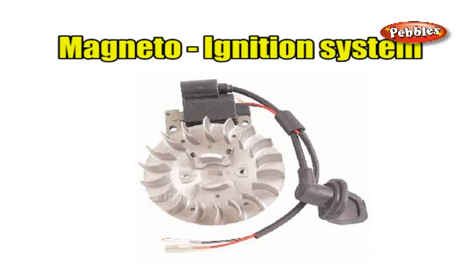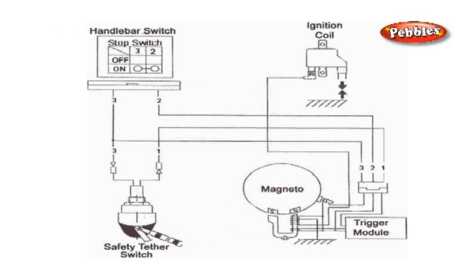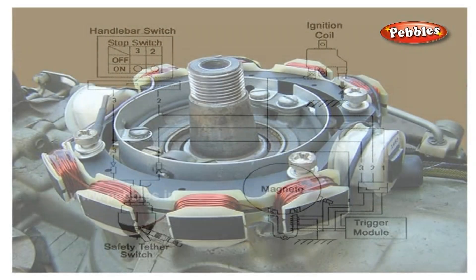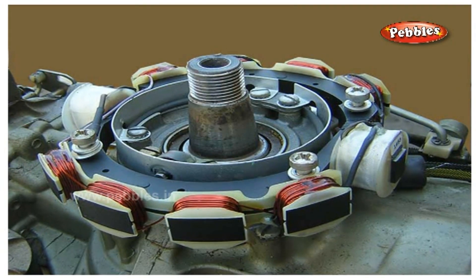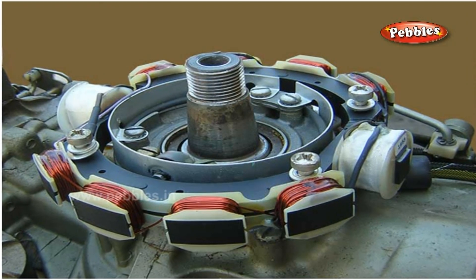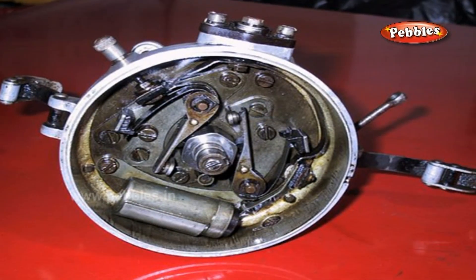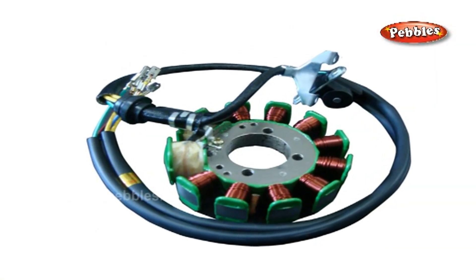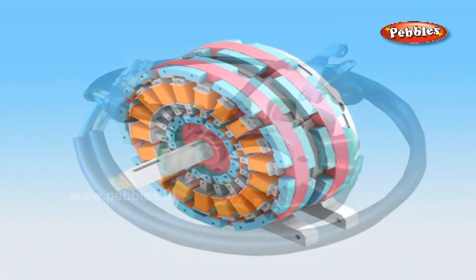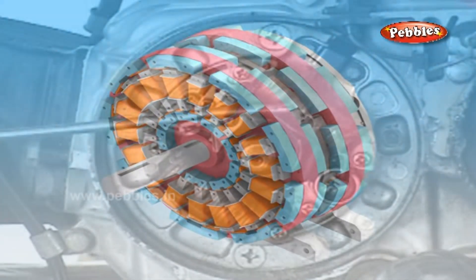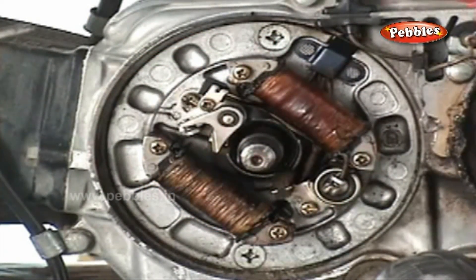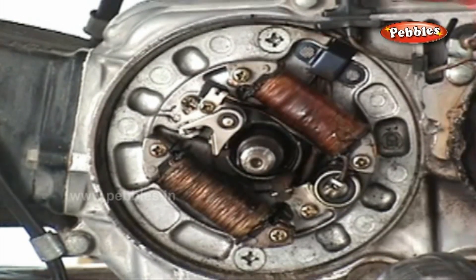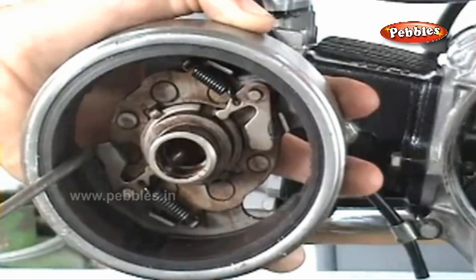The figure shows a sketch of a magneto ignition system. This is similar to the coil ignition system, except that the battery is replaced by a magneto. The magneto consists of a rotating magnet and a fixed armature, similar to an electric generator. The armature consists of primary and secondary windings.